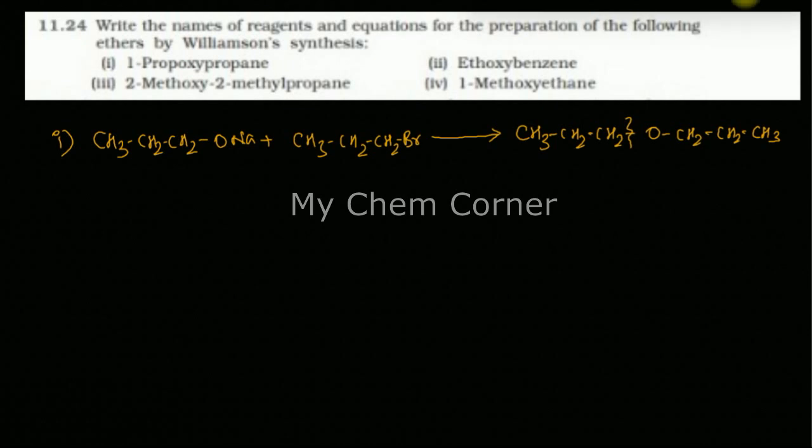Next one is ethoxybenzene. Here also same thing. Ethoxybenzene is where you have a benzene ring bonded to an ethyl group. So that is ethoxybenzene where you have oxygen and that's bonded to an ethyl group.